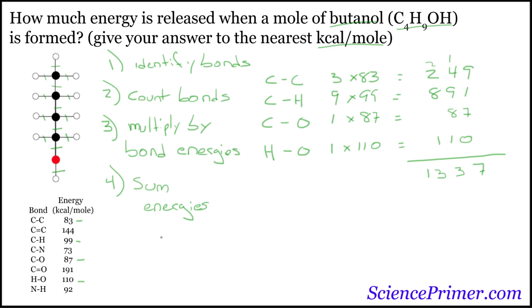So the answer to this problem is the energy released when a mole of butanol is formed is 1,337 kilocalories per mole.